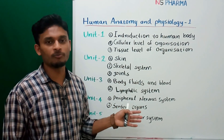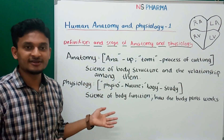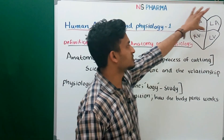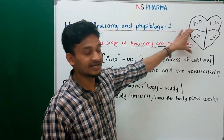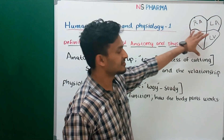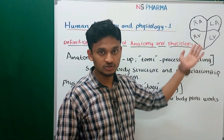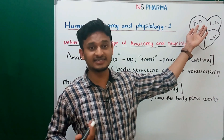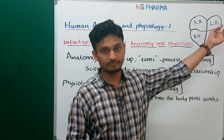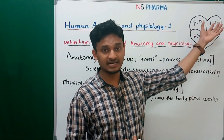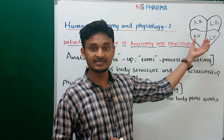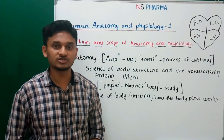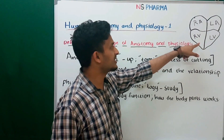Now let's begin with the definition and scope of Anatomy and Physiology. Before going to the definition, we will see the heart. Suppose this is a heart bisection. You know that the upper portion of the heart is called the atrium and the lower part is called the ventricle. Here it is the right atrium, left atrium, right ventricle, and left ventricle. These are the structures of the human heart, which you already studied in higher secondary school.